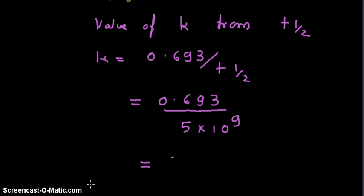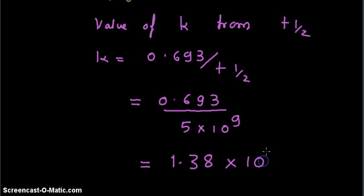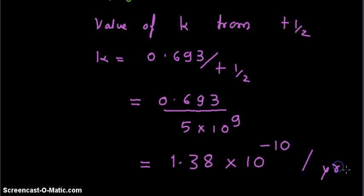This gives us k = 0.693 divided by half-life, equal to 1.38 × 10⁻¹⁰ per year.